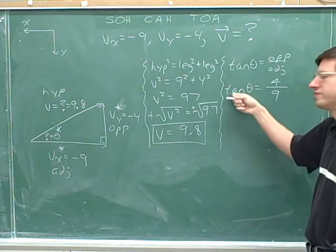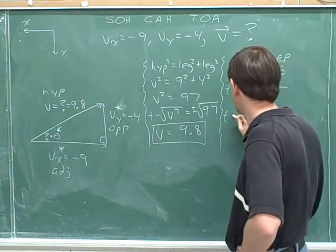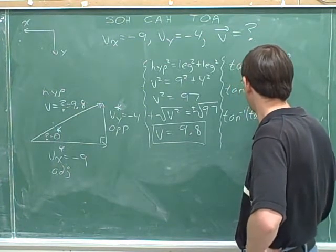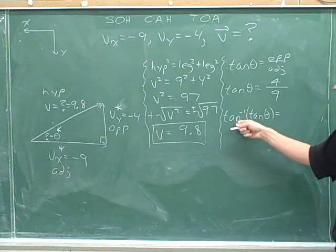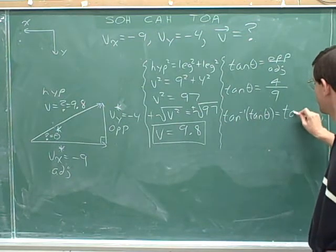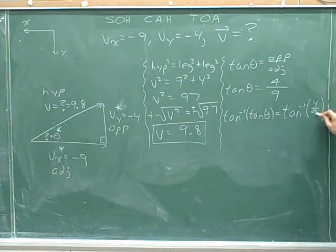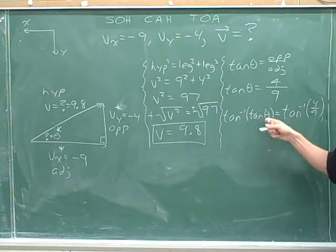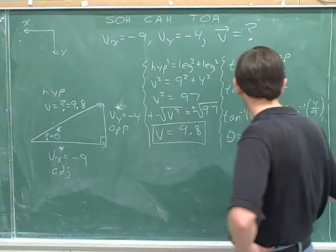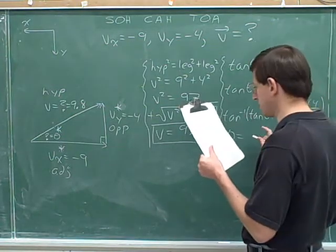To get the theta by itself, we have to remove the tangent by doing the opposite and taking the inverse tangent. But if we're going to take the inverse tangent of the left, algebra says we must take the inverse tangent of the right. Inverse tangent of 4 ninths. Well, the inverse tangent of a tangent of a variable is just the original variable. And then we'll use our calculator to find the inverse tangent of 4 ninths. 24 degrees.